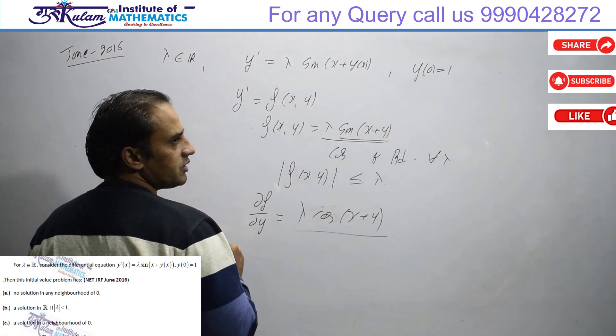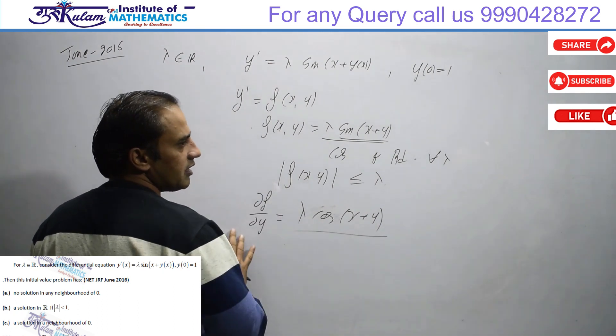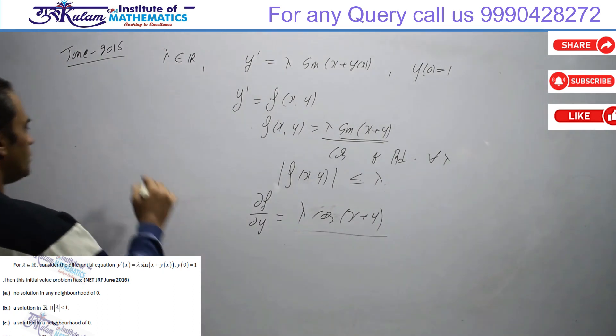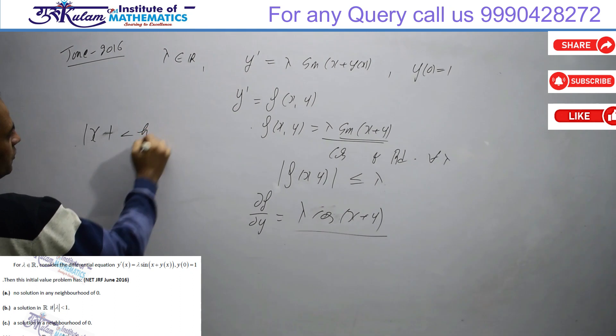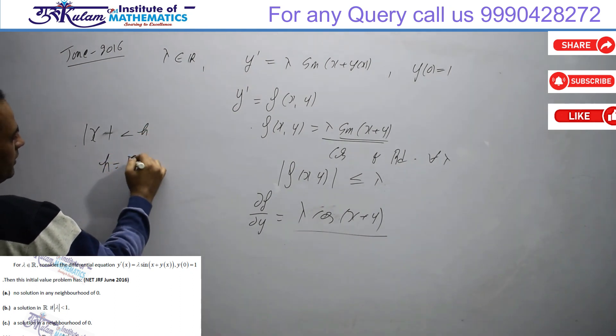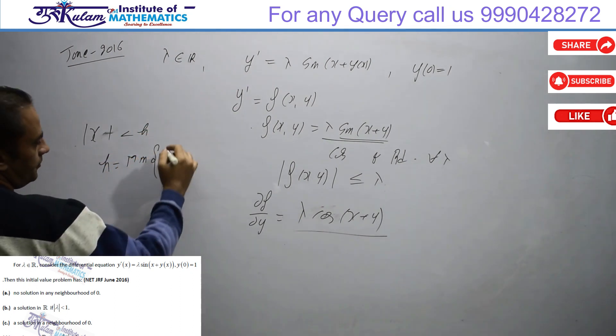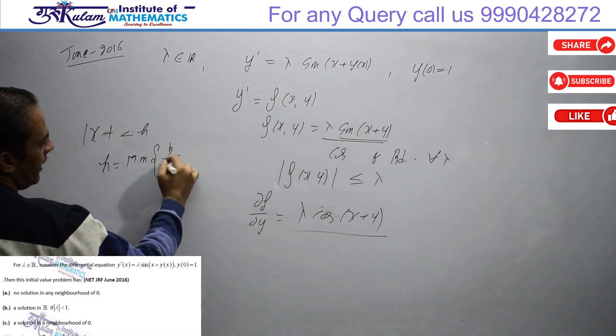If the function is Lipschitz continuous, then definitely by uniqueness theorem, this differential equation has a unique solution, and that solution is defined where |x - x0| < h, and h is calculated as minimum of b/m and a.